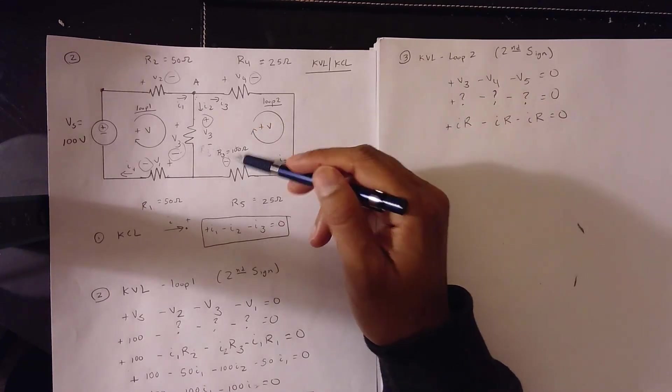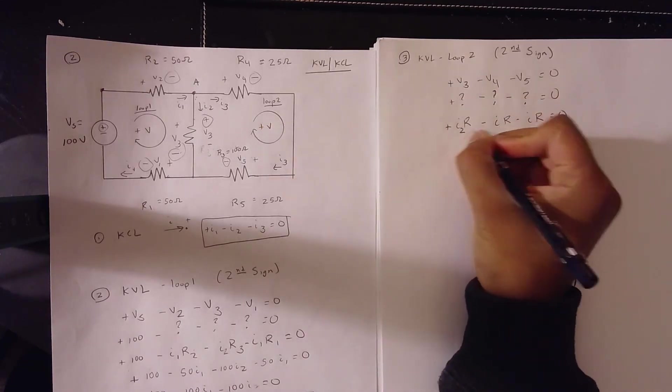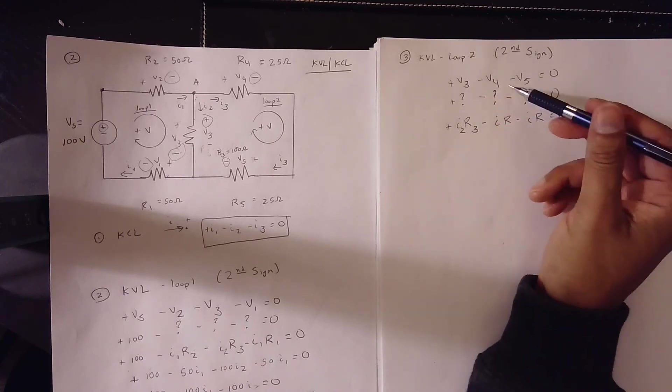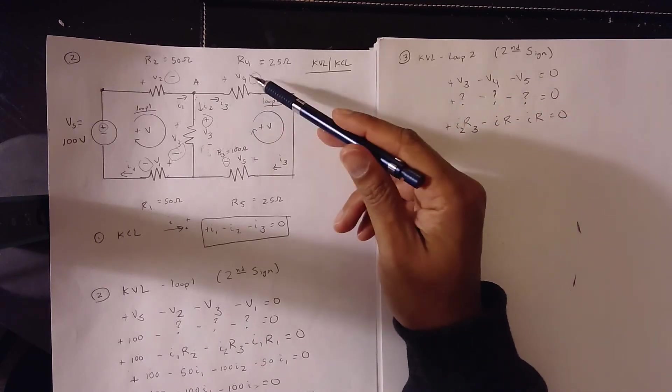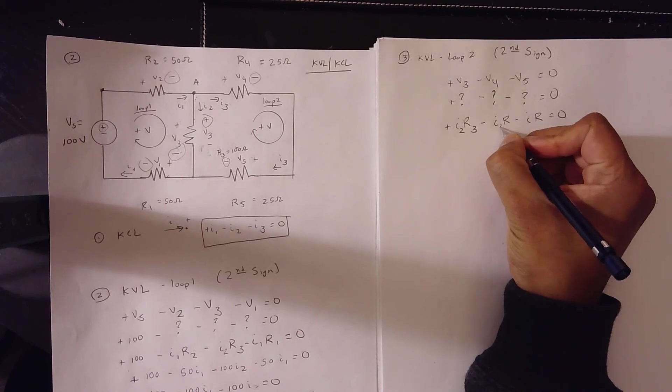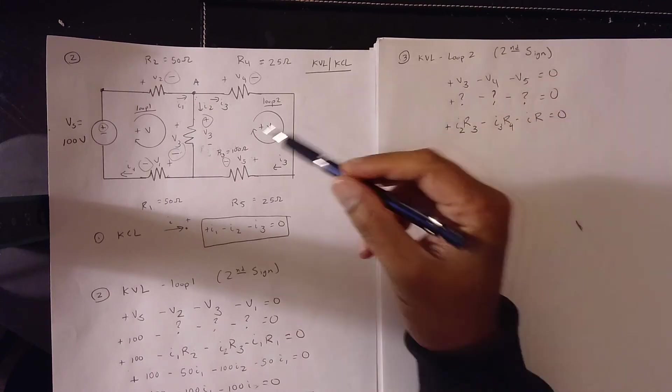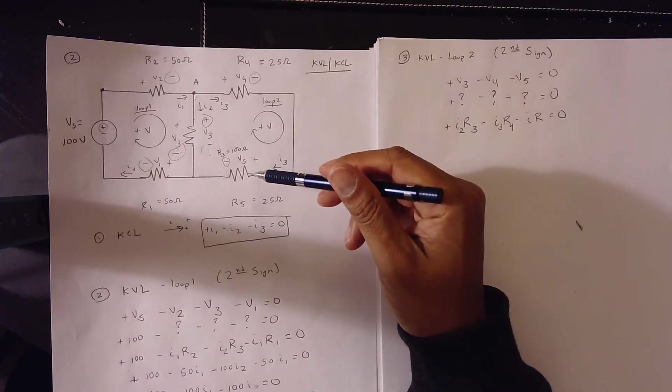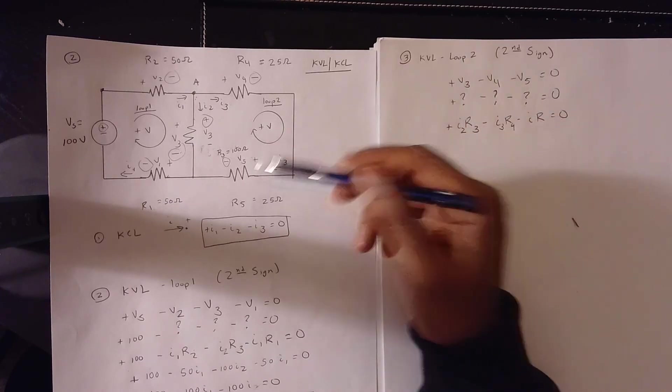Across V3, it's I2 R3. Across V4, it's I3 R4. Across V5, is I3 R5.